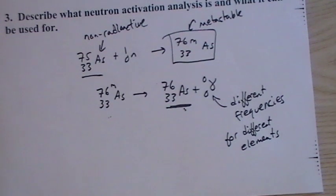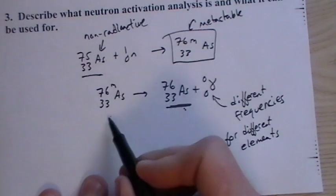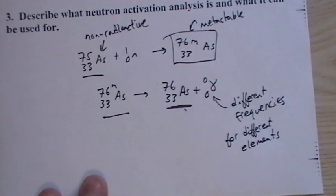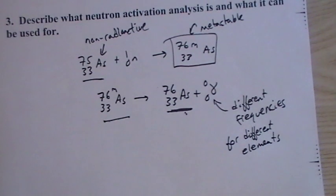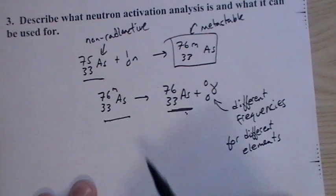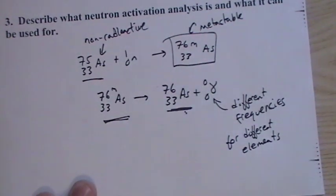And once you see that very specific gamma photon, that's a fingerprint for the element that's present. So if you're wanting to know if there's arsenic present in a certain substance, say in human hair of somebody who may or may not have been poisoned with a very low concentration of arsenic, this would be a way of determining it that would be very, very precise.